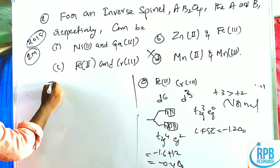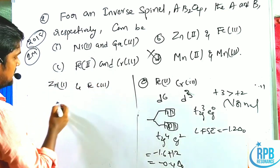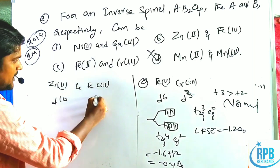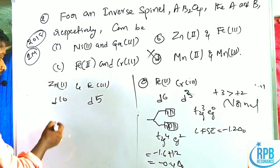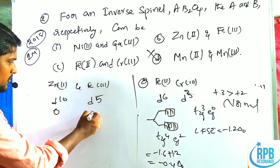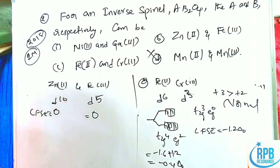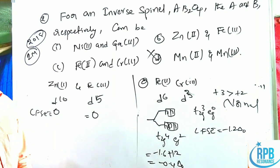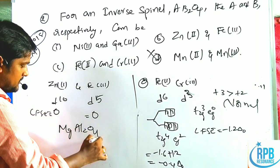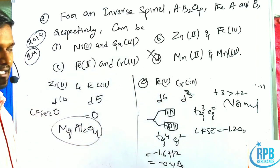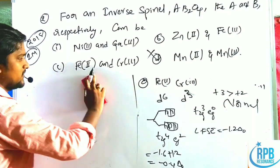Option B: Zn²⁺ and Fe³⁺. Zn²⁺ is d¹⁰ (CFSE = 0); Fe³⁺ is d⁵ (CFSE = 0). When both CFSE values are zero, it is similar to non-transition metals like MgAl₂O₄ — it is a normal spinel. So the remaining option is the answer.